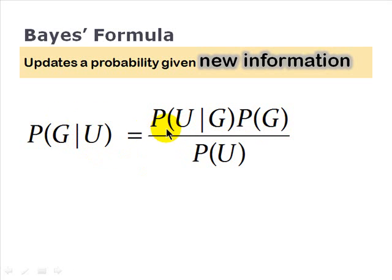In the numerator, we have a joint probability. See, the probability of G, if that occurs, it gets multiplied by the probability of U, given that G occurs. So in fact, what we have here in the numerator is a joint probability that both U and G occur divided by the probability of U.